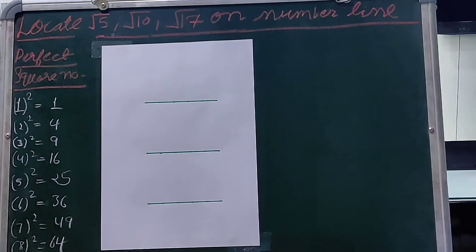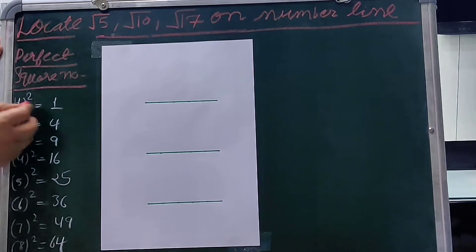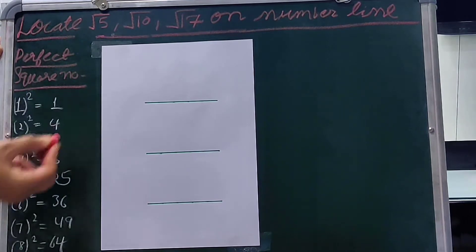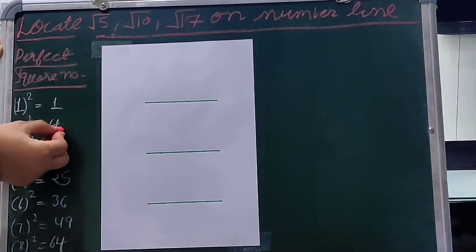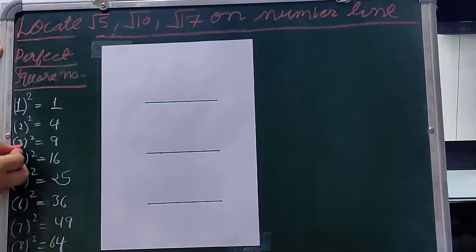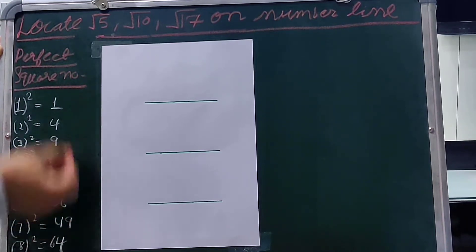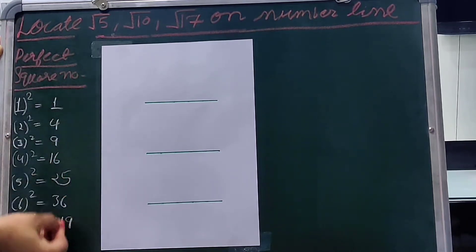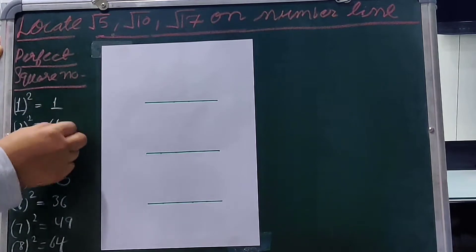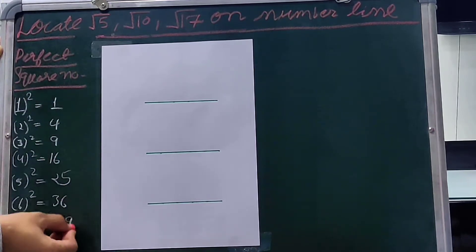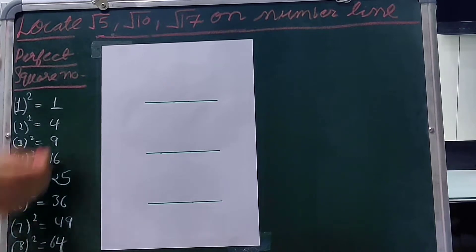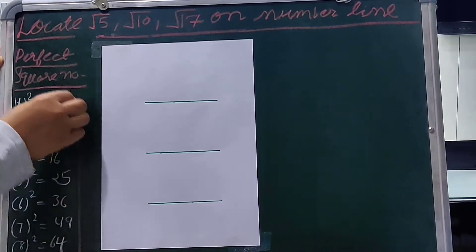First, tell me: what is a perfect square number? The perfect square numbers are the squares of whole numbers. Like 1 squared is equal to 1, 2 squared is equal to 4, 3 squared is equal to 9, 4 squared is equal to 16. So these are the perfect square numbers: 1, 4, 9, 16, 25, 36, 49, 64, and so on.